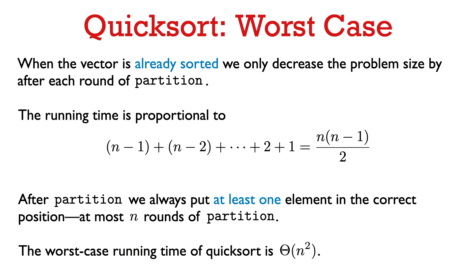So the number of times we call partition is n-1. Each call takes time proportional to the sub-problem size; the i-th call has a sub-problem of size n-i, so sizes go n-1, n-2, and so on. The total running time when the vector is already sorted is proportional to the sum of the first n-1 integers, which equals n(n-1)/2. This shows that this version of QuickSort takes time Ω(n²) when the input is already sorted.